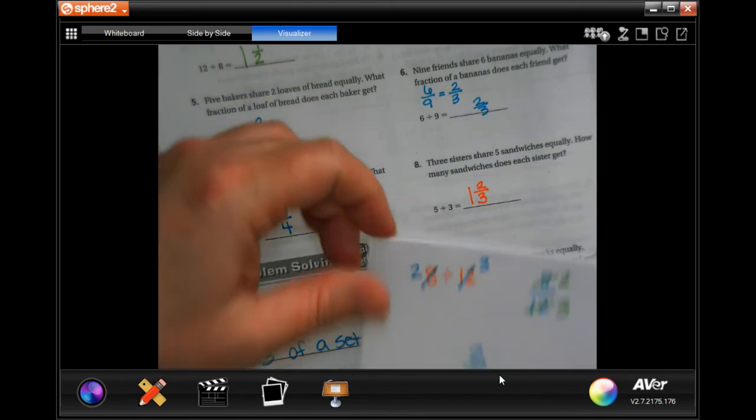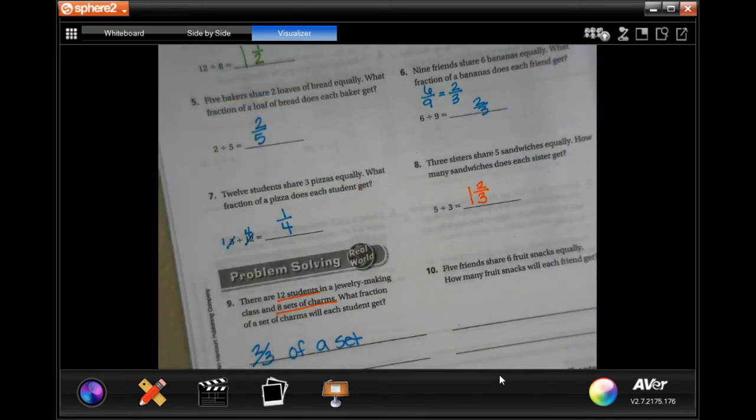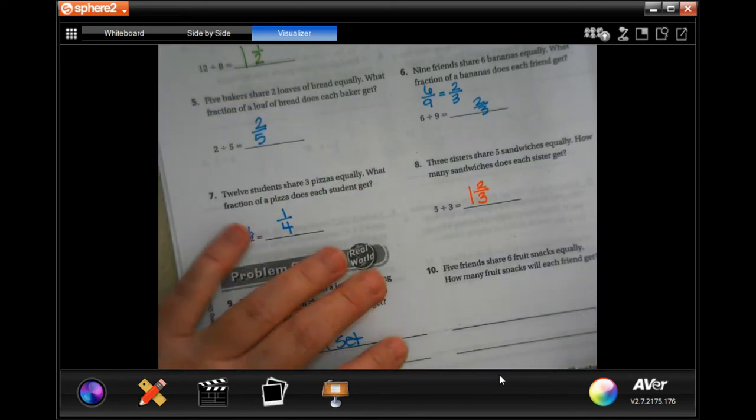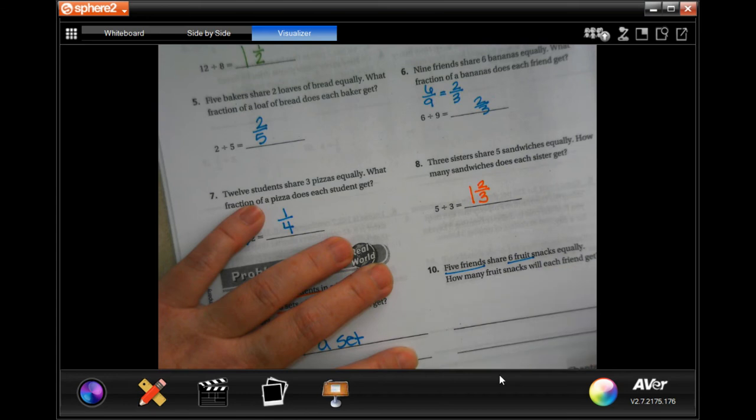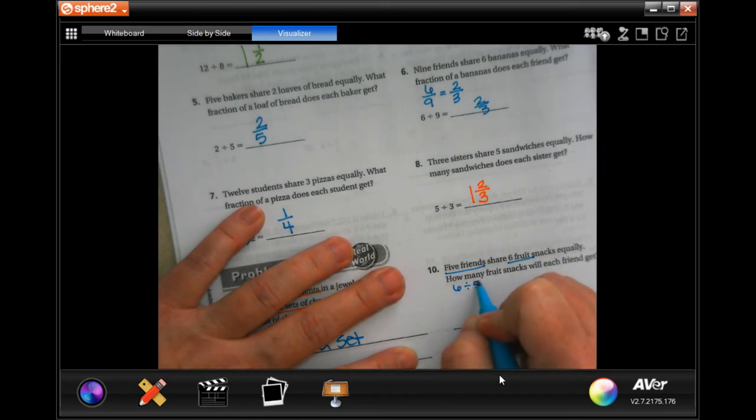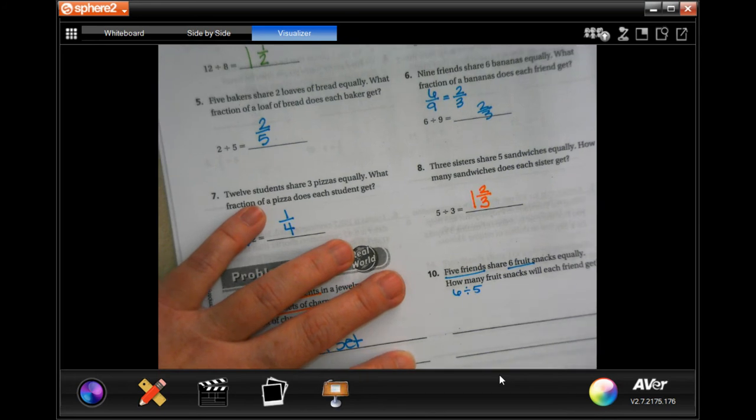All right, five friends share six fruit snacks. So they have six fruit snacks and five friends are sharing them. So it's going to be six divided by five. Well, five goes into six one time.